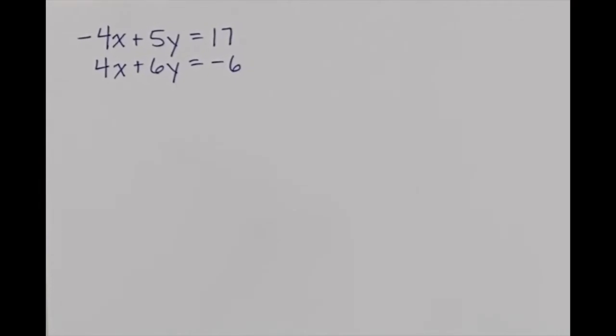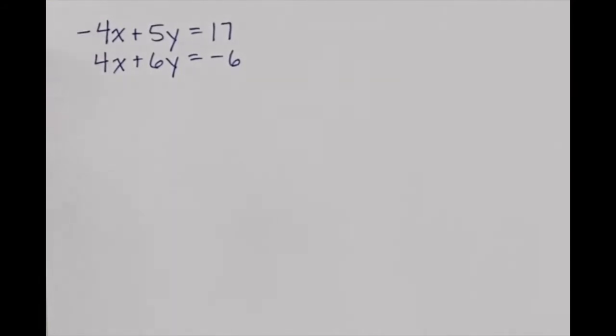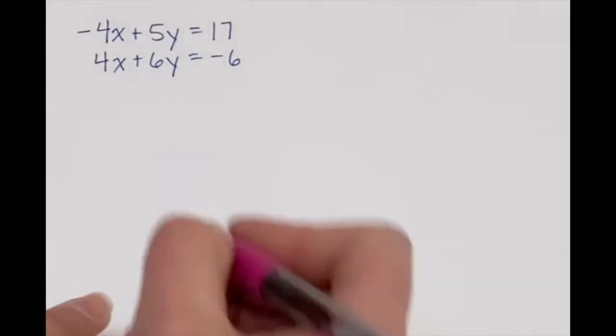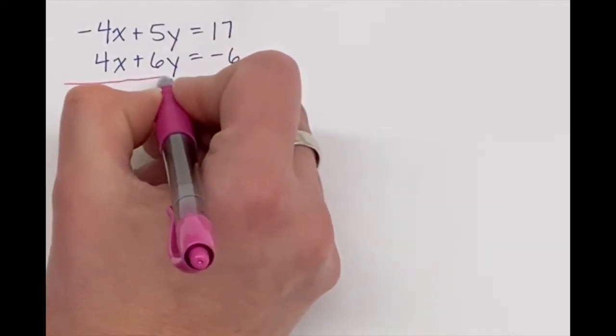So we could graph this, we could change this to slope-intercept form, or we could solve for a variable. But in fact, there is a much simpler way to come to our answer. It's called elimination. So when your coefficients are either the same or additive inverses, you can simply eliminate that variable by adding or subtracting.